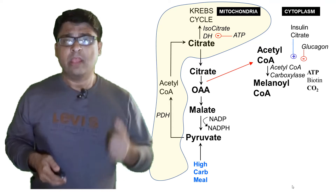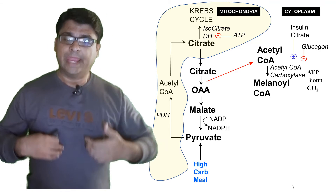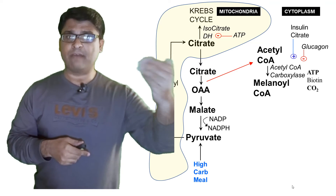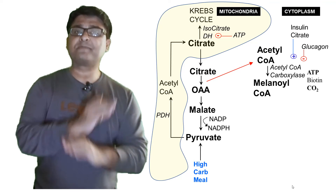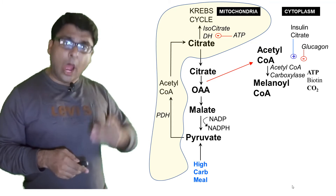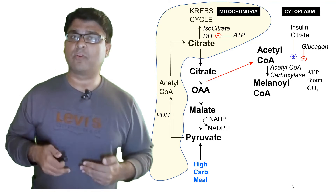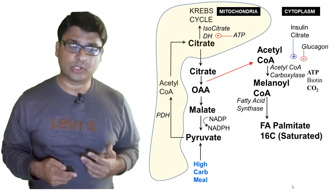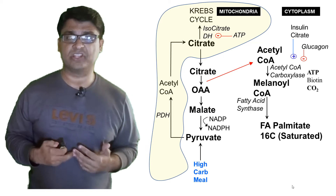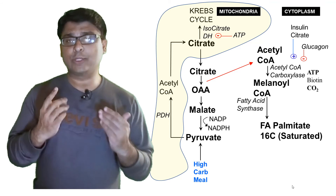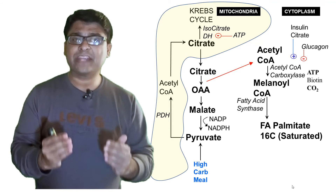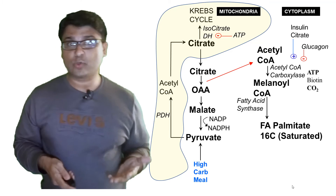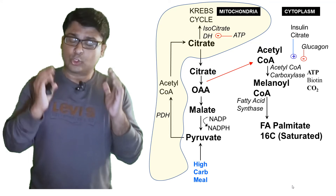To recap: when you have a high carbohydrate meal, glucose is converted into pyruvate by glycolysis, enters the mitochondria via Acetyl-CoA and citrate into the Krebs cycle. When a lot of ATP is produced, the Krebs cycle is inhibited, citrate levels increase, and citrate comes out into the cytoplasm where it is converted into oxaloacetate producing Acetyl-CoA. From Malonyl-CoA, the next step is production of the fatty acid palmitate by the enzyme fatty acid synthase — a 16-carbon saturated fatty acid with no double bonds.